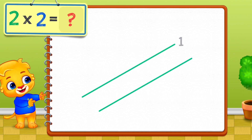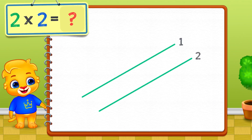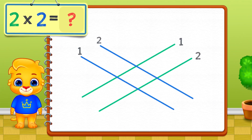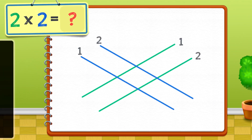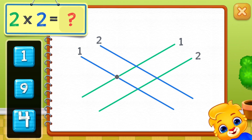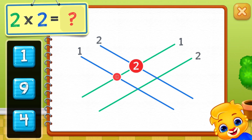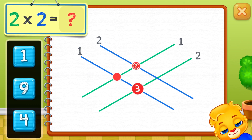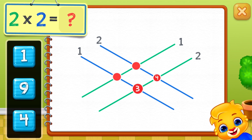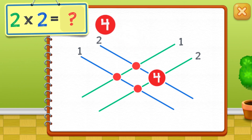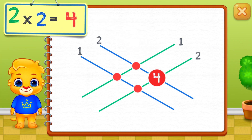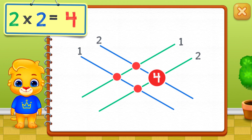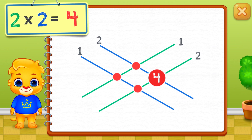Two times two equals — one, two, three, four. Two times two equals four.